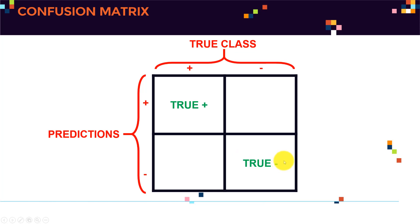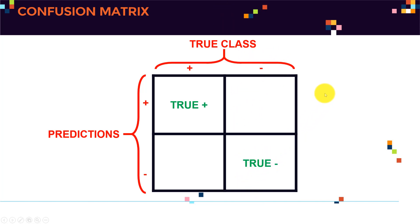If my model predicted negative, for example, and my true class was actually negative, that's what we call true negatives. We mark them as green, because that's when everything is good — I hope my model will be able to get all the true positives and the true negatives.